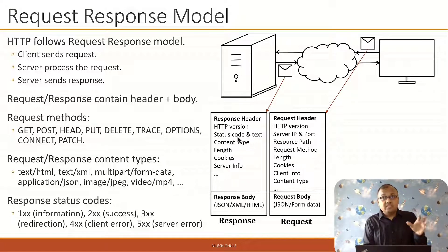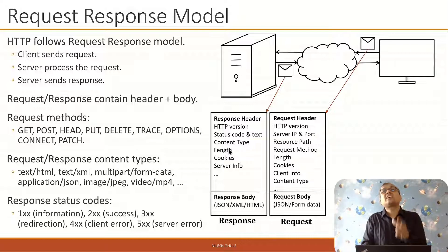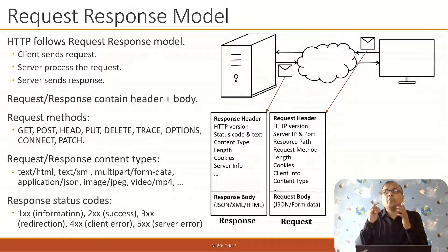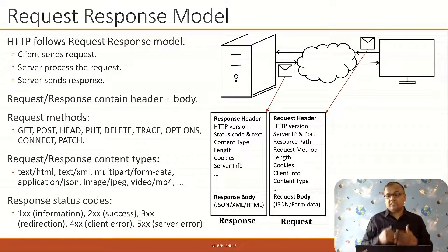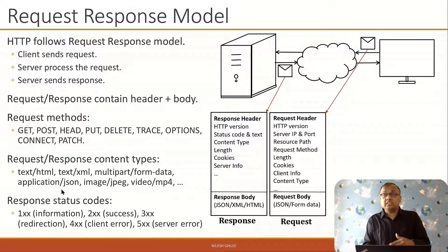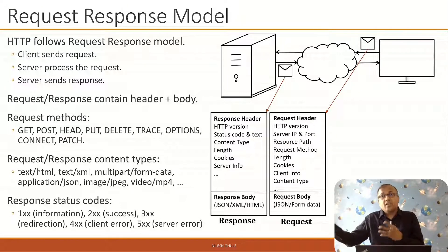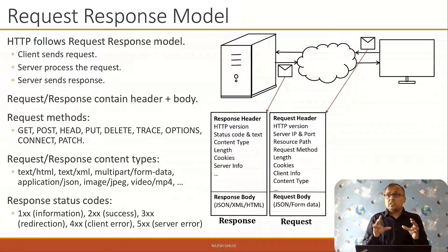Apart from the status code, the response also includes a Content-Type header, telling the client what type of response is being sent. The most popular response type is 'text/html' for web pages dynamically built from server-side processing. We also have 'application/json', very popular in REST services, as well as 'image/jpg' or 'image/png' for images, and content types for videos, audios, and so on.